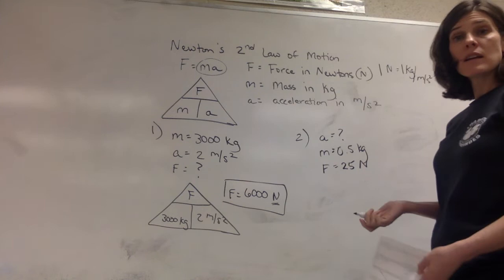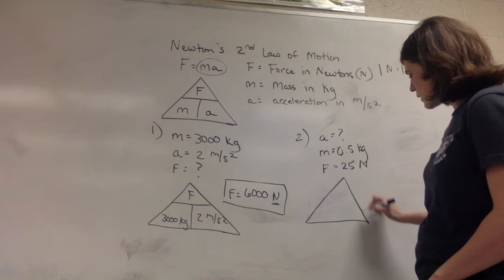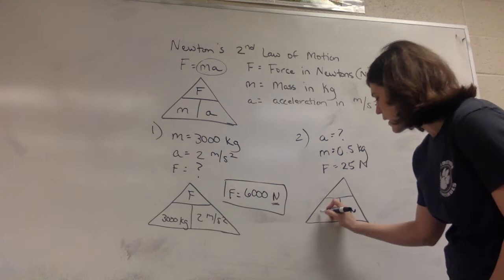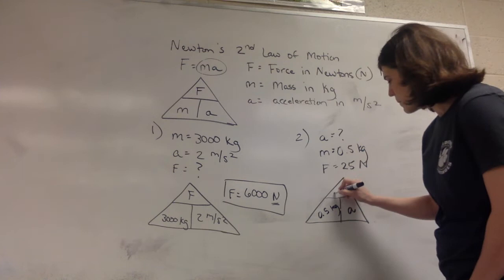Remember, even though we're solving for a different variable, if we go back to the triangle we're going to plug into the appropriate spots. So now we're solving for a, so let's leave the a here. We have a mass of 0.5 kilograms and the force which goes on top is 25 Newtons.